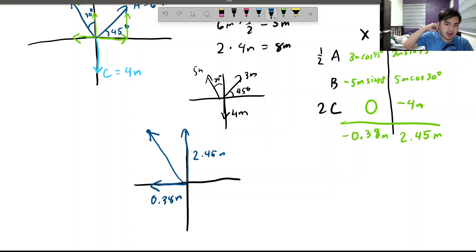So, how do we find the magnitude of this? Well, what we have to do is to just use the Pythagorean theorem. So, 2.45 squared plus 0.38 squared. And then, we put the square root of that. So, the answer for that is around 2.48 meters. Or, if you want to be exact, around 2.48 meters. It is 2.48 meters.